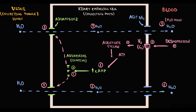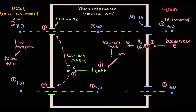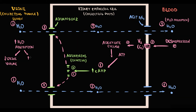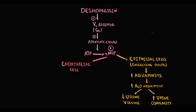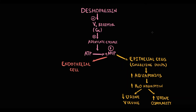The higher the water absorption, the lesser the volume of fluid left in the lumen of the collecting ducts, and thereby the lesser the volume of fluid excreted in urine. Also, the lesser the volume of fluid, the higher the concentration of osmotically active substances, and thereby the higher the urine osmolarity. So desmopressin's effect on kidney tissue causes decreasing urine volume and increasing urine osmolarity.